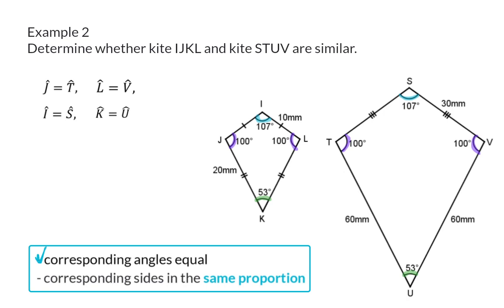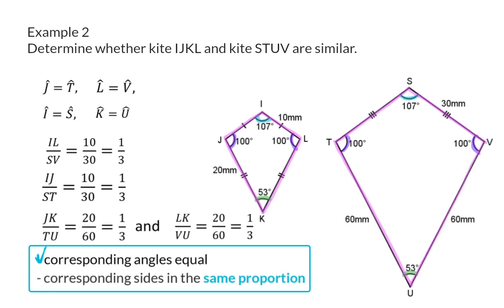Next up I'm going to compare the side lengths. IL over SV is a ratio of 10 over 30, which is a third. Similarly, IJ over ST can also be simplified to a third. For the sides at the bottom, JK over TU is also a third. So here all the corresponding sides are also in the same proportion.